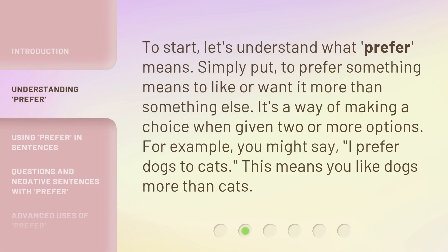To start, let's understand what 'prefer' means. Simply put, to prefer something means to like or want it more than something else. It's a way of making a choice when given two or more options. For example, you might say, 'I prefer dogs to cats,' which means you like dogs more than cats.